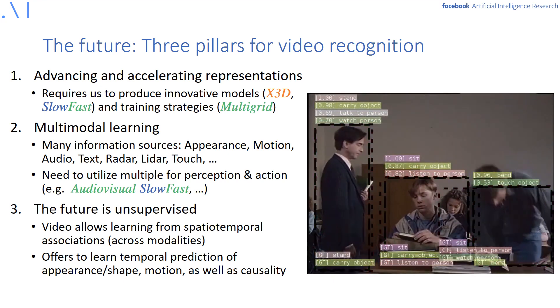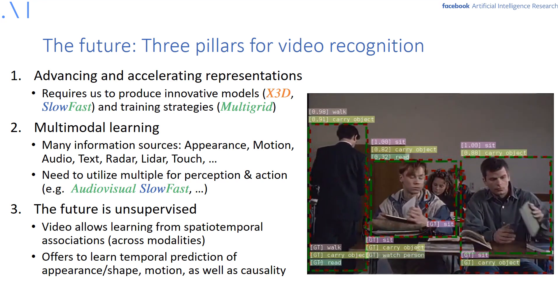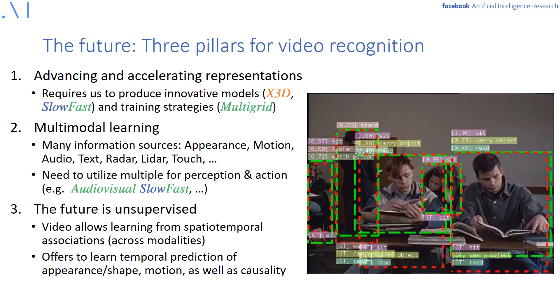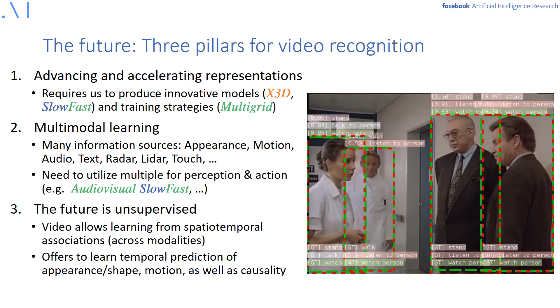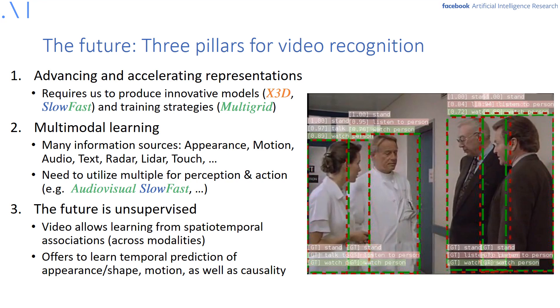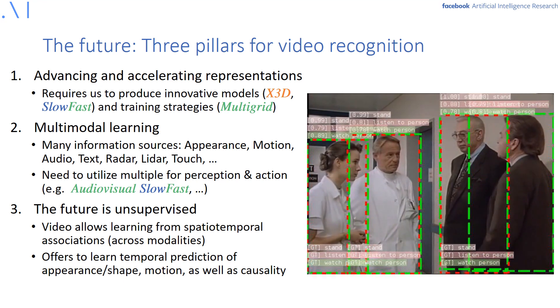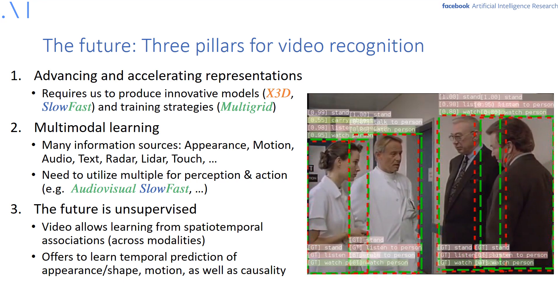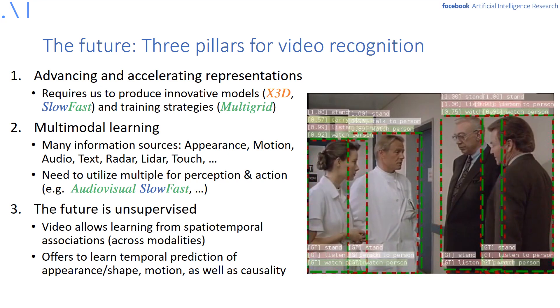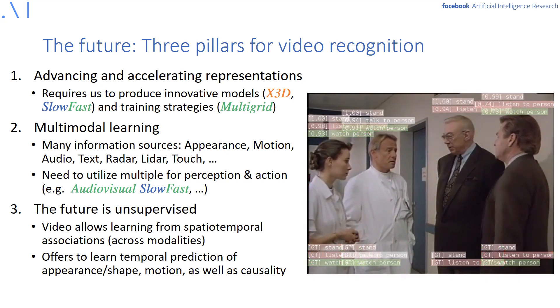In conclusion, there are in my point of view three important aspects for moving forward in video recognition. First, advancing and accelerating video modeling will need innovative models such as X3D or SlowFast presented in this talk, and also training strategies like multigrid. Second, the world is multimodal and video captures this richness. I think our models should also hear and see. Maybe SlowFast is the first small step into this promising direction. And third, this goes without saying, the future will be unsupervised. Video is the medium that allows us to learn from spatiotemporal associations across modalities, predict the future from the past and even perform higher level reasoning that take for example causality into account.